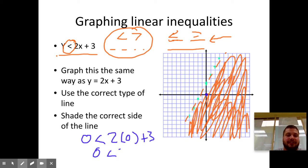Is 0 less than 2 times 0 plus 3? Yes, 0 is less than 3. See, that made it true. Any point up here, like, say, for instance, let me get a different color again. This point right here would make it false.